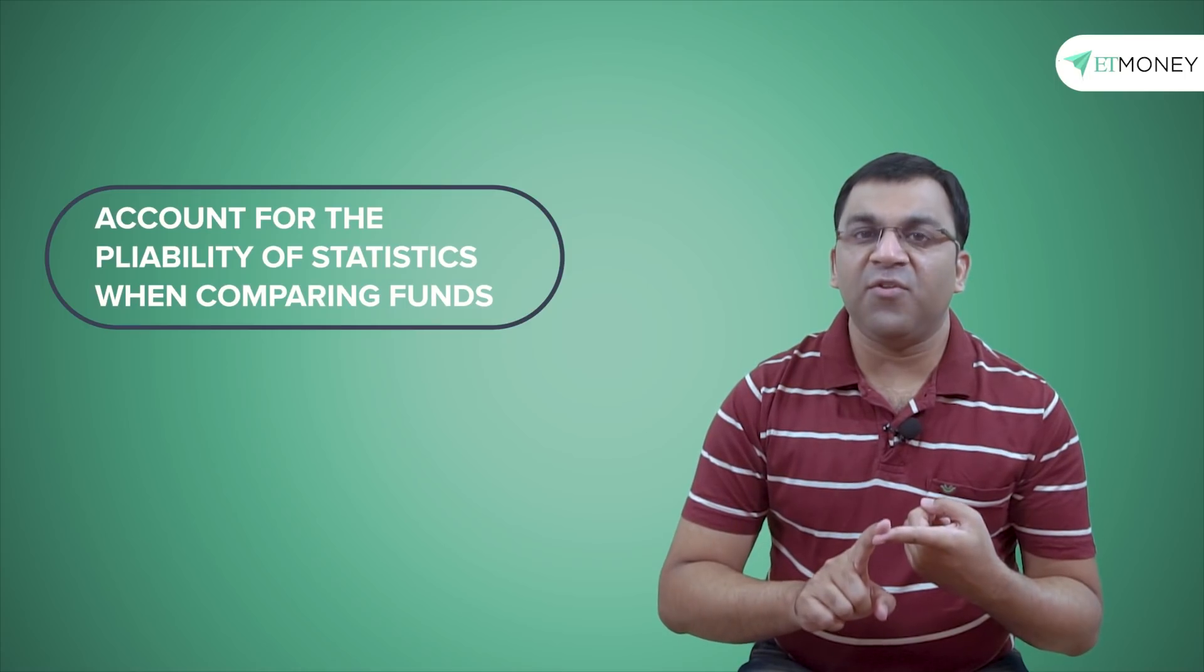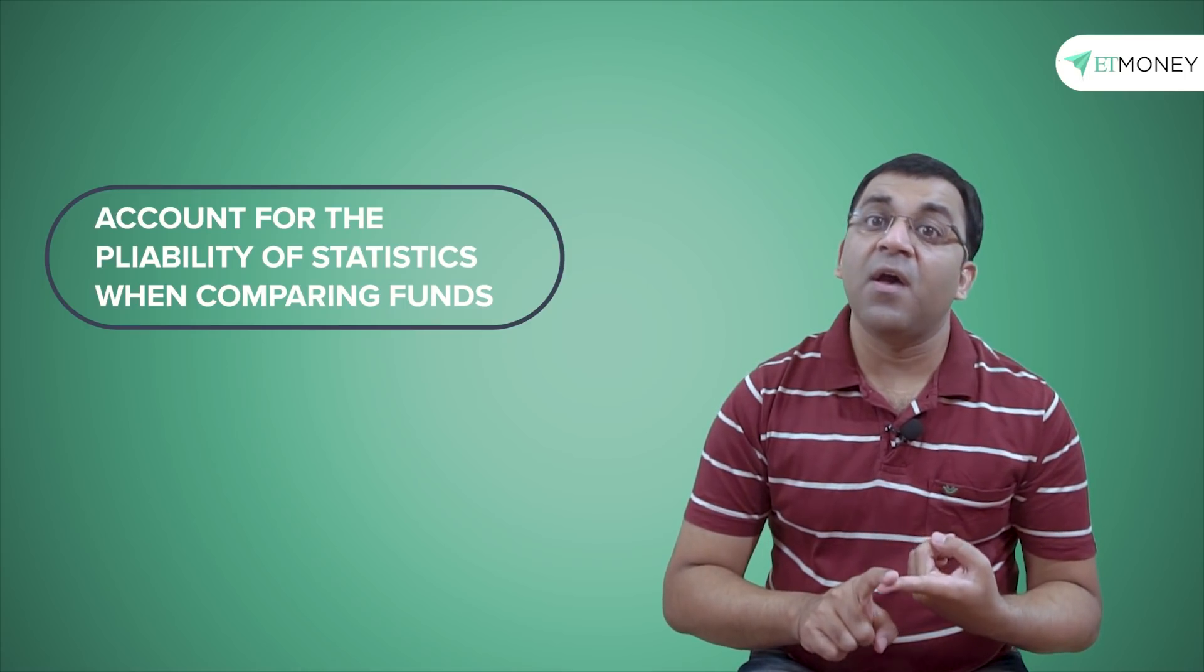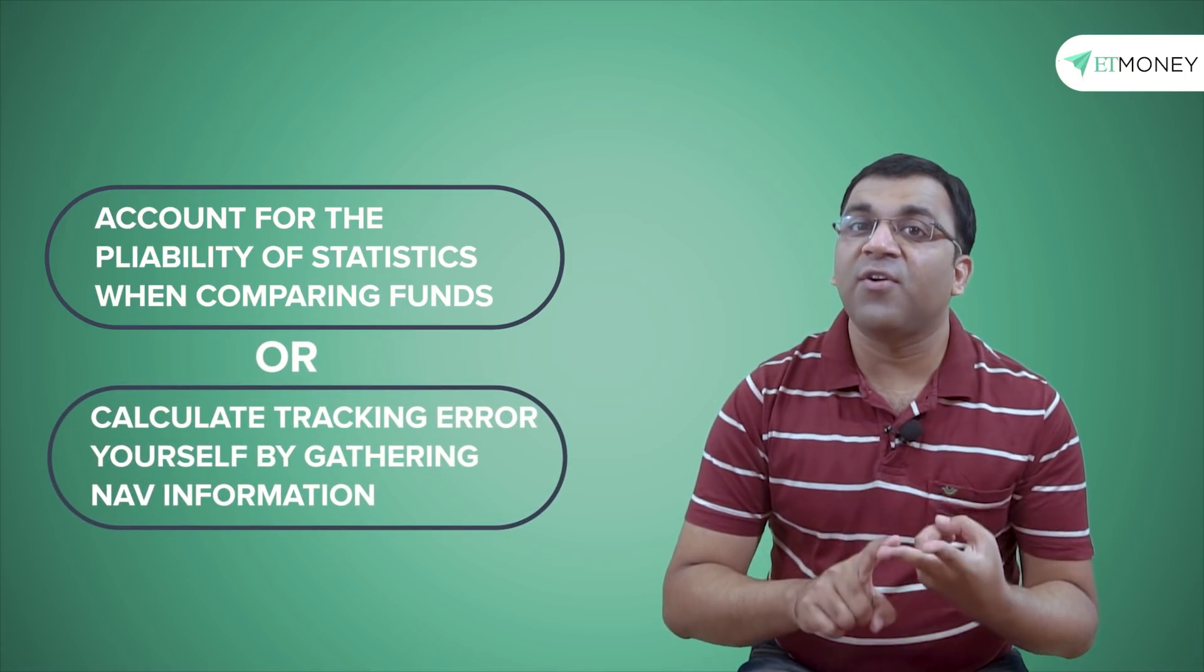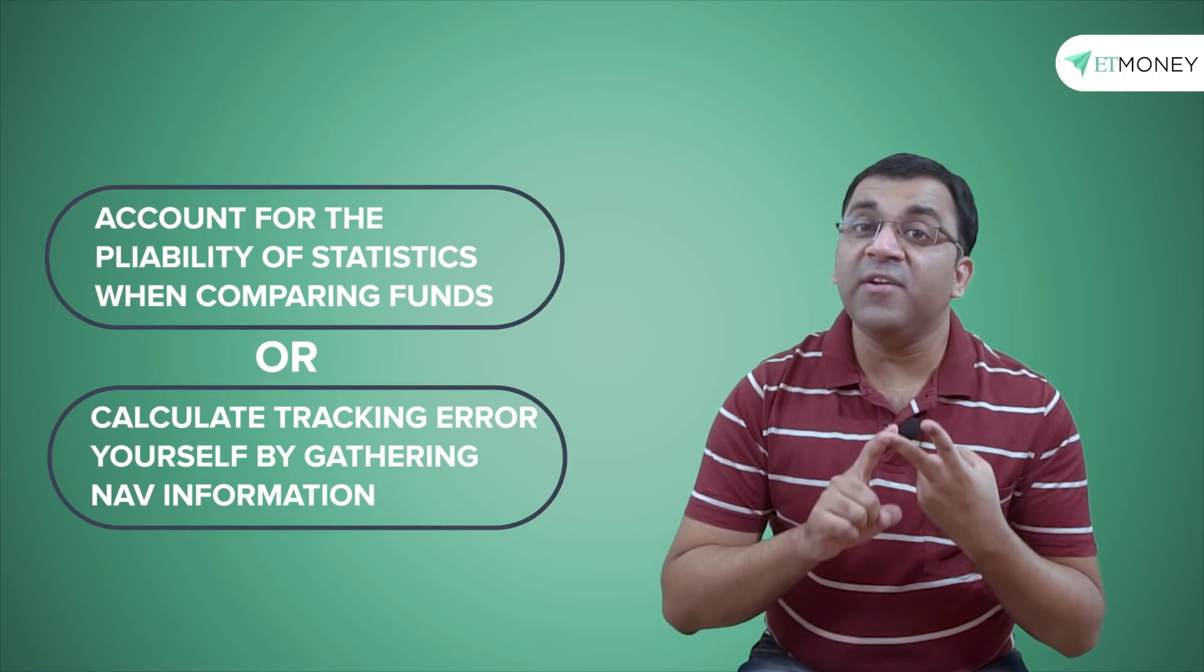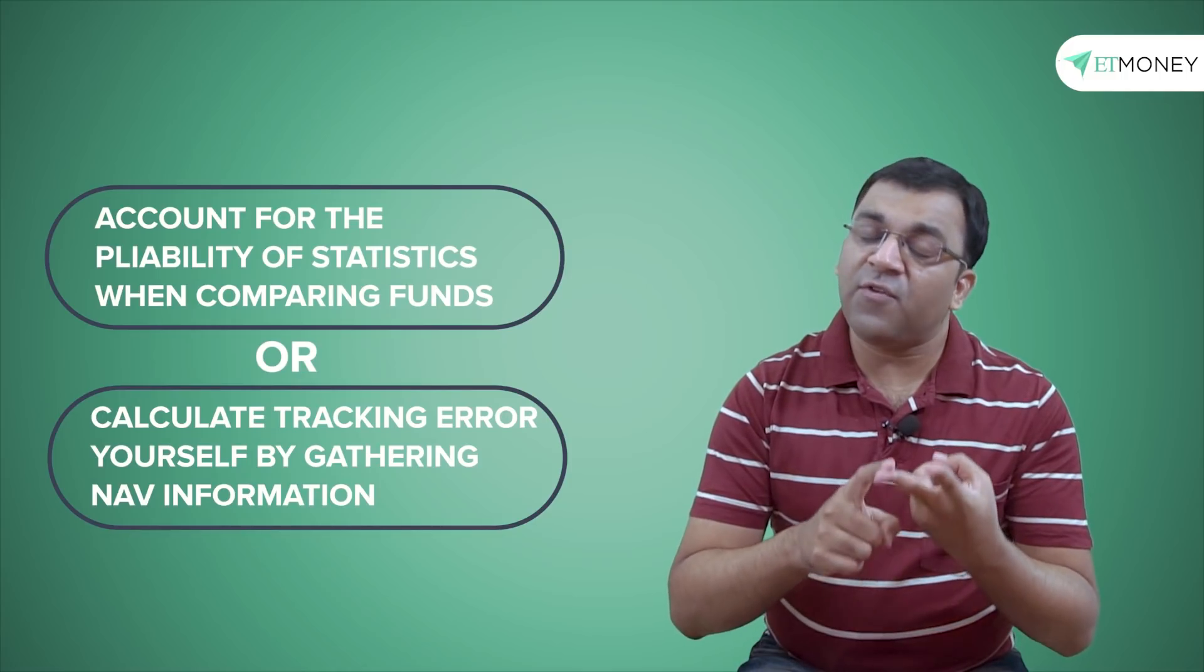These are big differences in methodologies and it's very likely to produce different non-comparable results. So as an investor, here are your options: you either account for this pliability of statistics when comparing funds, or you can pull out the historical NAV information from the AMC website and do the tracking error calculations yourself on a spreadsheet.